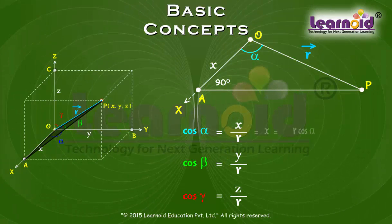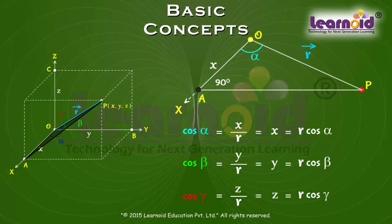Or coordinates X, Y and Z can be written as X is equal to LR, Y is equal to MR and Z is equal to NR which are proportional to the direction cosines.